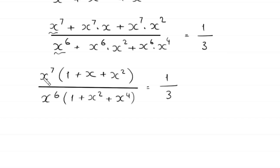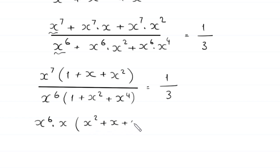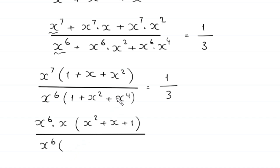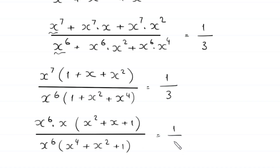Now, this x to the power 7 can be written as x to the power 6 times x. We rearrange these terms and write x squared first: x squared plus x plus 1, divided by x to the power 6 times — we rearrange these terms and write x to the power 4 first — x to the power 4 plus x squared plus 1, is equal to 1 over 3.